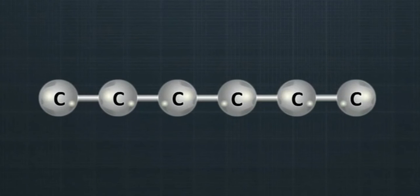Because of catenation, carbon atoms can link with each other to form a large variety of compounds such as linear chains in which carbon atoms are joined to one another in a straight chain as shown.